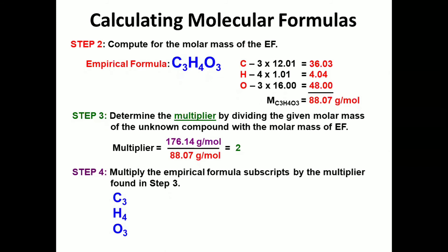Then let's use the multiplier, 2. And once more, multiply it with their subscript. Thus, carbon has 6, hydrogen 8,